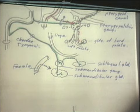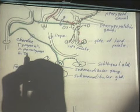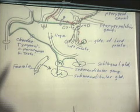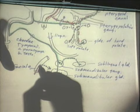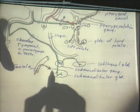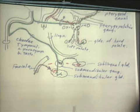Besides parasympathetics, the chorda tympani also carries taste from the anterior two-thirds of the tongue. So the chorda tympani is a fairly important nerve — it travels with the lingual nerve and carries both parasympathetic fibers and taste. For sympathetics, post-synaptic fibers travel on any vessel sending branches to either gland.